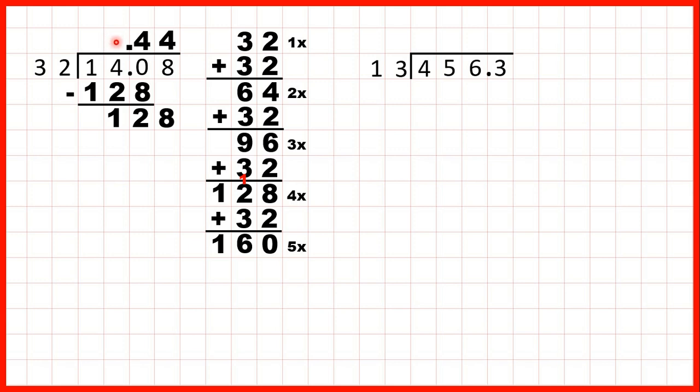But here, we've written 0.44 as our answer, and we always need a digit before the decimal point. So because this square's empty, we need to write a 0 to give us 0.44 as our answer.